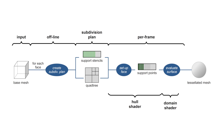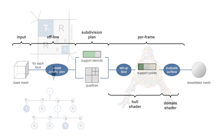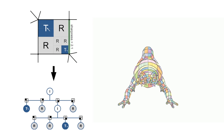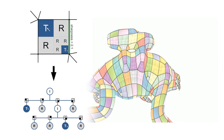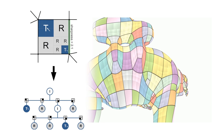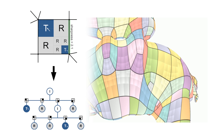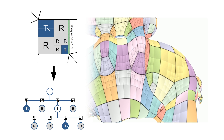The pre-computed data includes a quadtree representing the adaptive subdivision hierarchy of the input face. For each tessellated vertex, we traverse this quadtree to map the vertex into a directly evaluable subdomain.